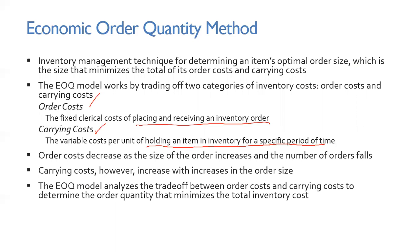Order costs decrease as the size of the order increases and the number of orders falls. Carrying costs increase with increases in order size because more inventory needs to be held. So the EOQ model analyzes this trade-off.